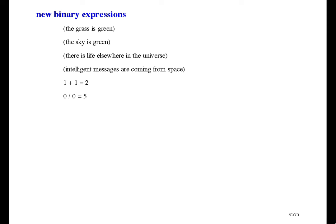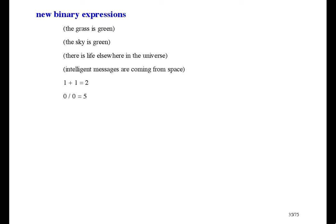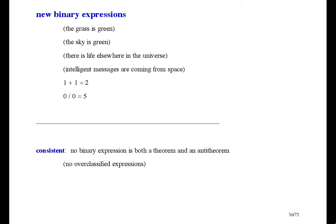The application also has to tell us which of the new expressions are theorems and which are anti-theorems. When you're classifying binary expressions as theorems and anti-theorems, it's really important to be consistent — that means you don't want to classify some binary expression as both a theorem and an anti-theorem. You might like to be complete also, which means you've classified every binary expression one way or the other, but you don't have to be complete. You do have to be consistent.